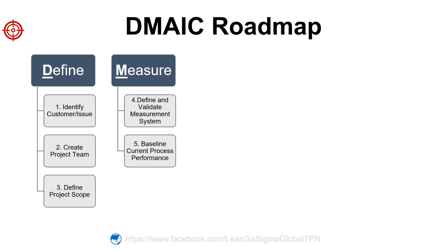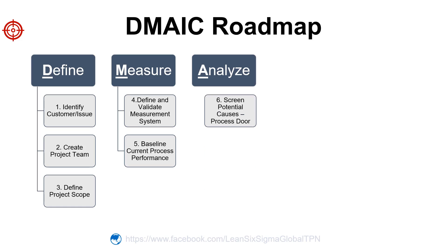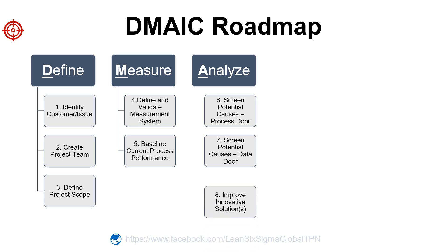The Analyze phase is what makes Lean Six Sigma projects more powerful. The purpose is to identify variation drivers and to propose solutions — to identify and evaluate process inputs and determine which are the most influential root causes of process performance. Steps in this phase are to screen potential process causes, screen potential data causes, and develop innovative solutions.